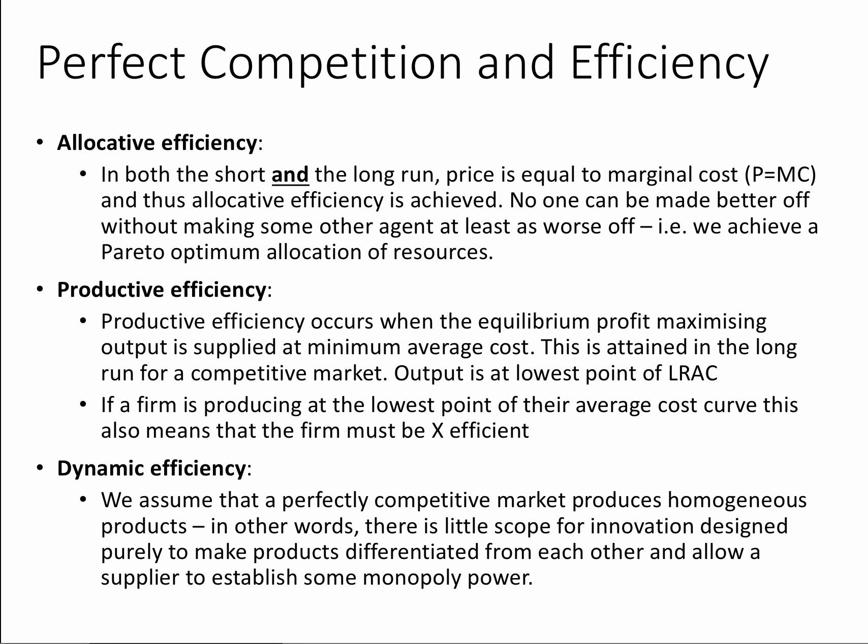If we think about economic efficiency in this industry, perfect competition is excellent for allocative efficiency — price equals marginal cost in both short and long run, achieving a Pareto optimal allocation of resources. It's also very good for productive efficiency because at output Q2, output is supplied at minimum average cost — firms are at the lowest point of their average cost curve and are X efficient. But perfect competition is not necessarily as good as other market structures for dynamic efficiency, since products are homogenous and there's relatively little scope for innovation that one firm can benefit from without other firms immediately getting the spillover effects.